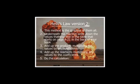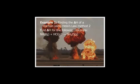Hess's Law Version 2. This is the easiest of them all, and students love to default to this — it's the simplest. Underneath the reaction, write down the values you find in the back of your book, on page 821 in your textbook, or every chemistry book has a table of thermodynamic data. You add them up by multiplying and dividing as needed. Let's do some examples.